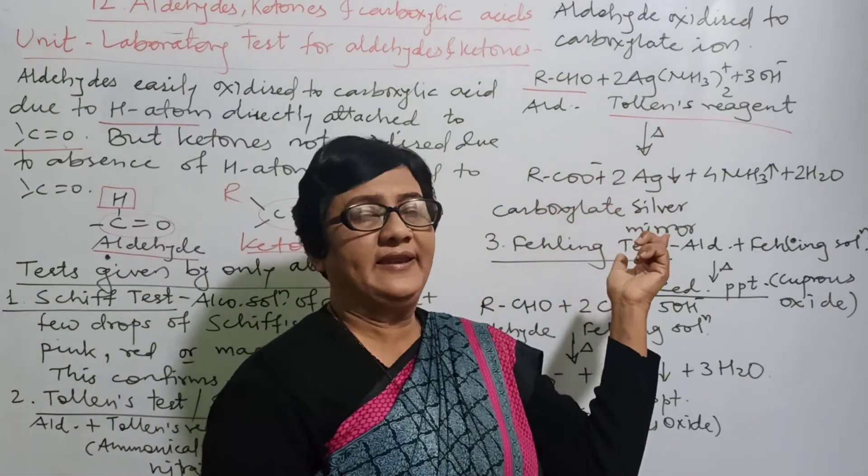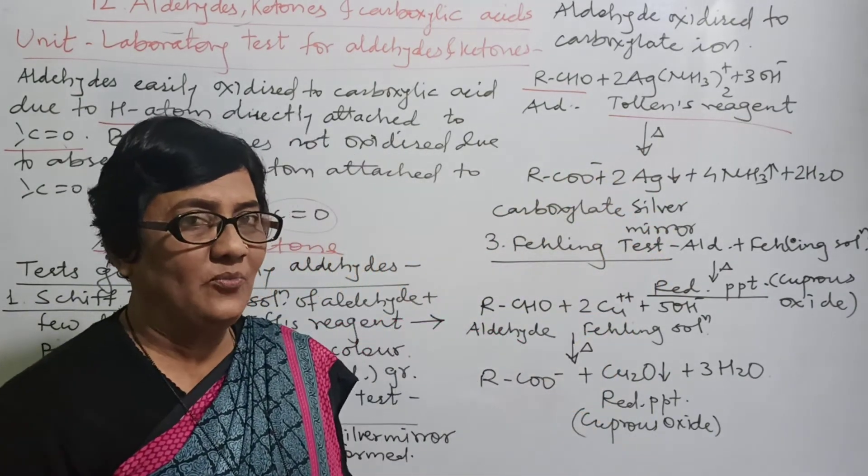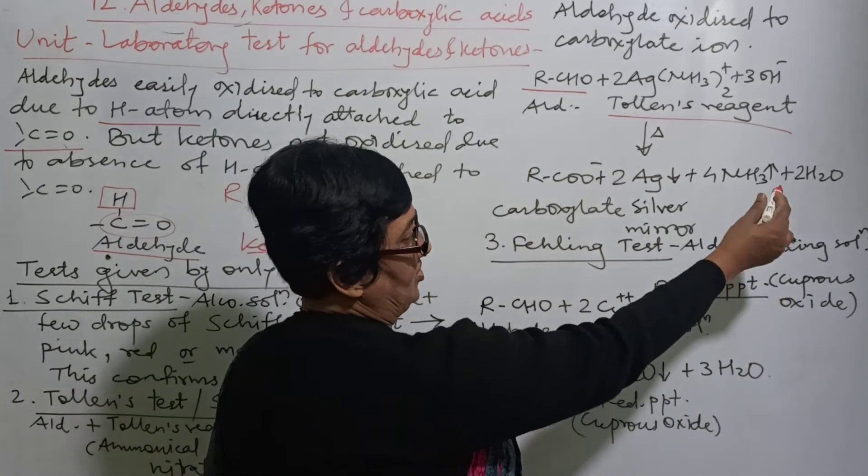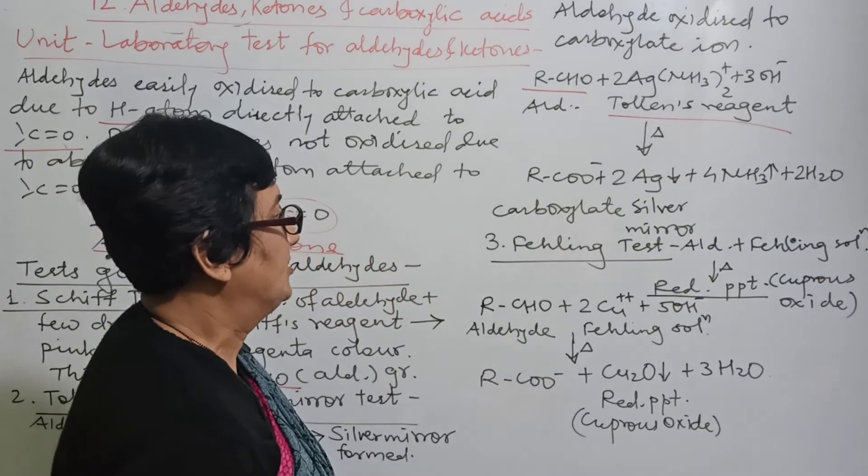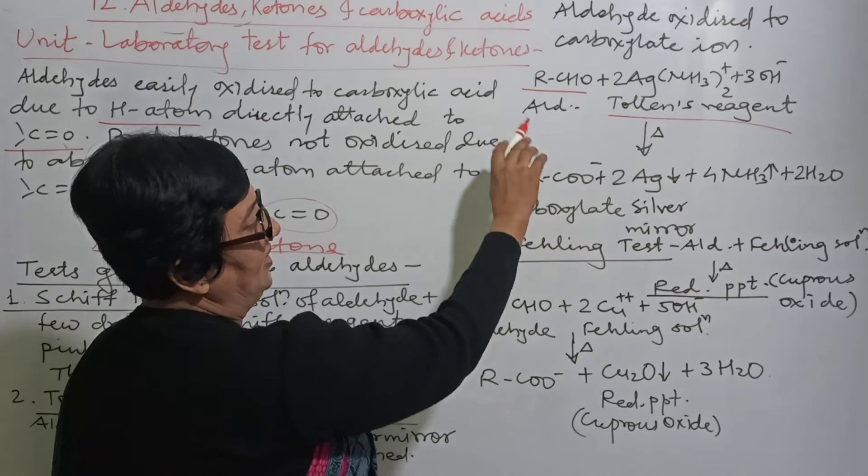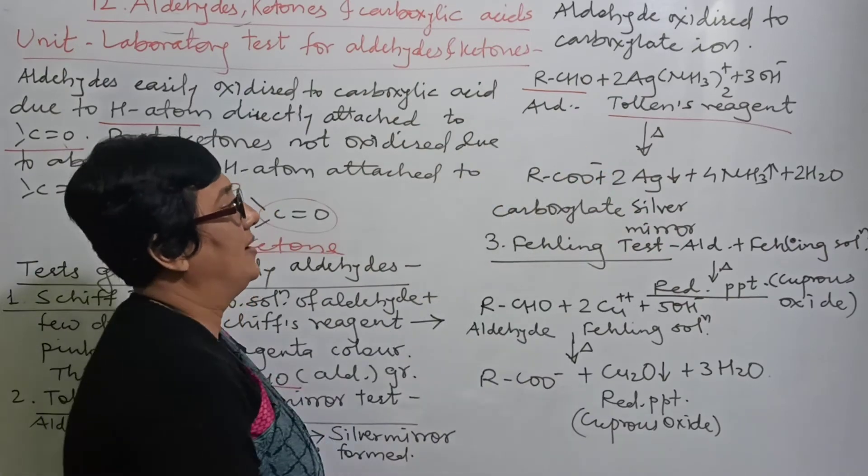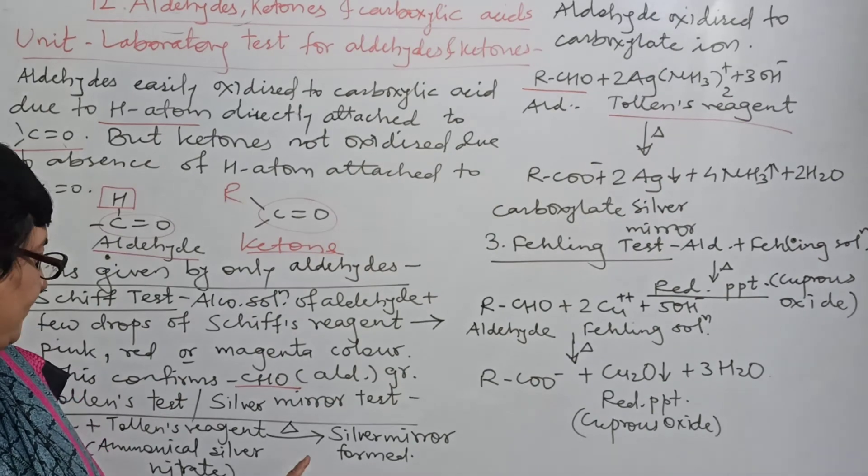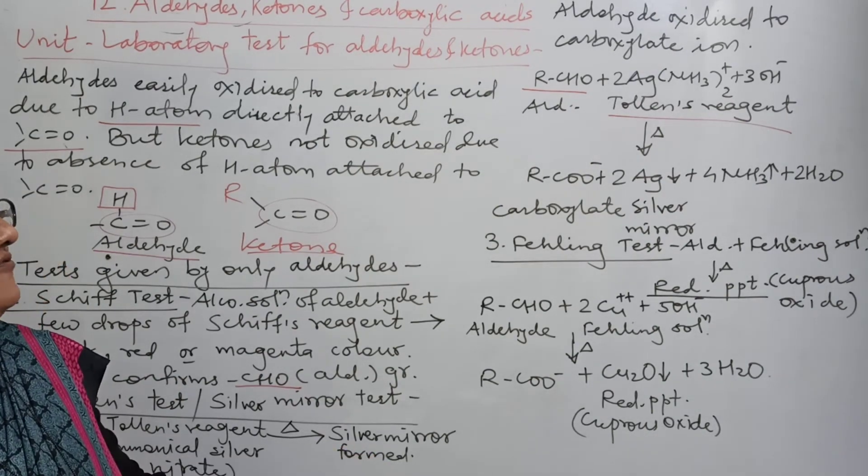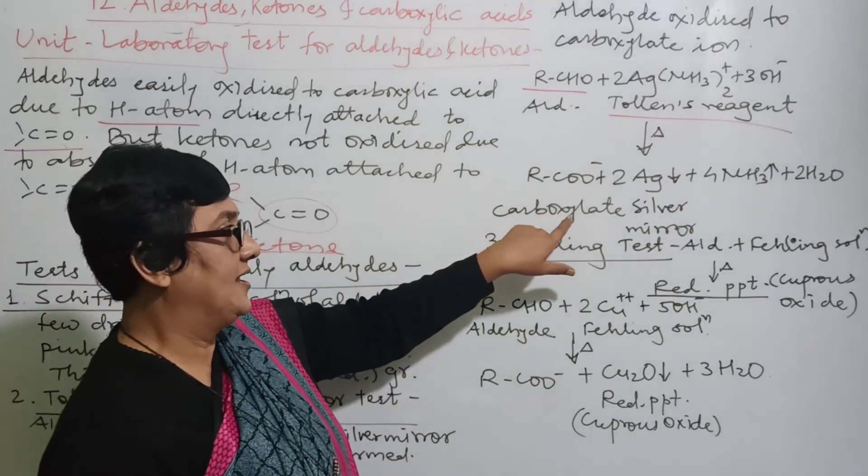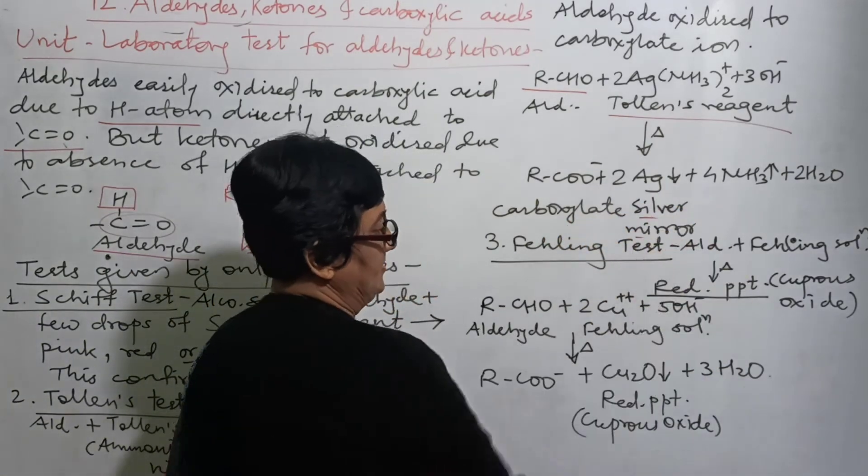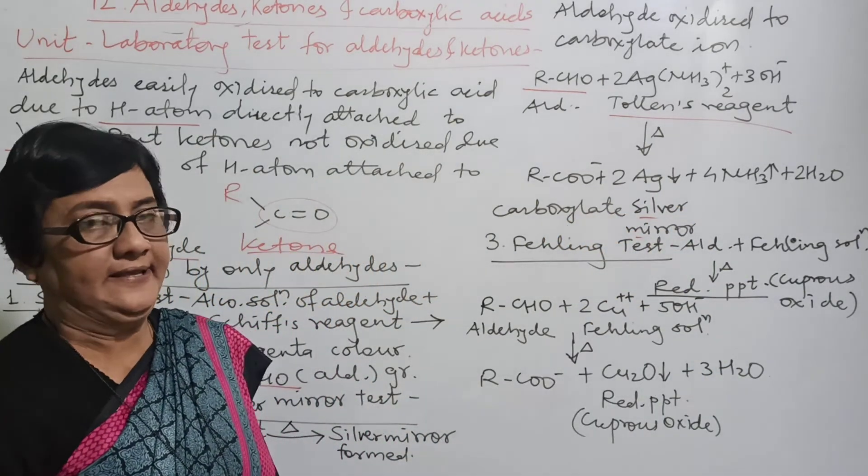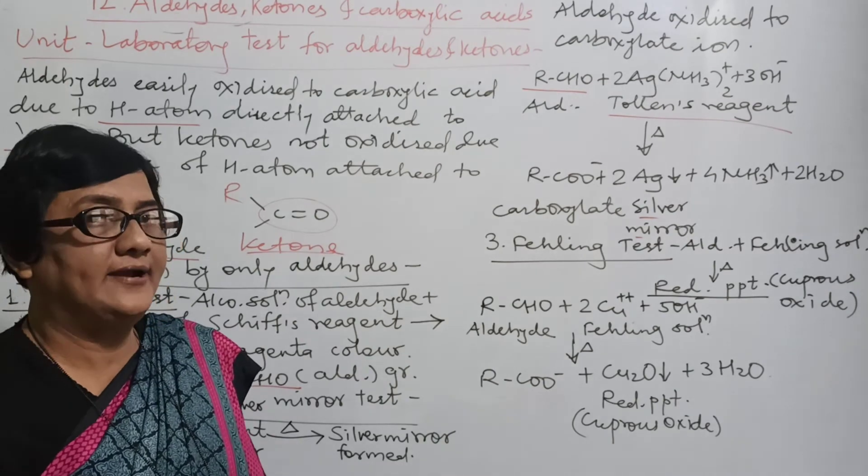And that's why when we do the test in the lab, we cough a little because of ammonia. Plus water molecules are lost. So this is the complete reaction which carries 1 mark. If you write correctly with all charges written properly, what forms here is a silver mirror. So carboxylate and silver mirror means deposition of silver. So this is a very simple test, called a color test, and aldehyde shows this.